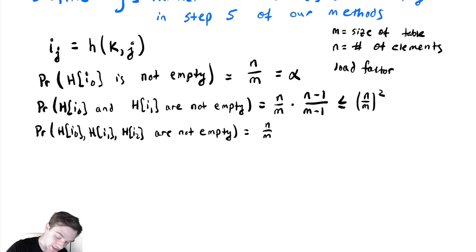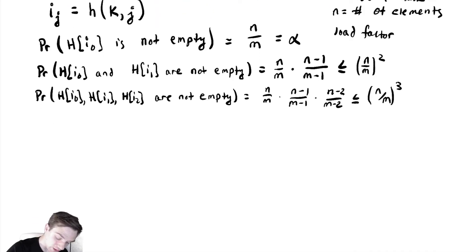That will be that the first one isn't empty and the second isn't empty and the third isn't empty, which is less than or equal to (n/m)^3. Now we want to generalize. What's the probability that h[i_0] up until h[i_(k-1)] are not empty?